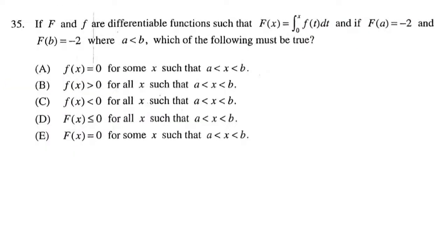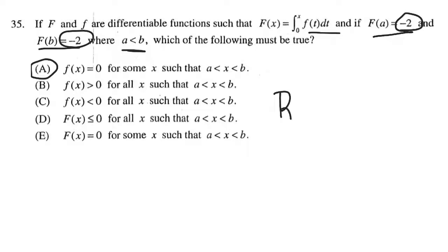We're told that capital F and lowercase f are differentiable functions such that F(x) equals the integral notation given, with F(a) = -2 and F(b) = -2, where a < b. Notice this looks an awful lot like we have the same endpoint values. By Rolle's theorem — more specifically Rolle's theorem — we know that f'(c) = 0 for some c in (a, b) must be true.